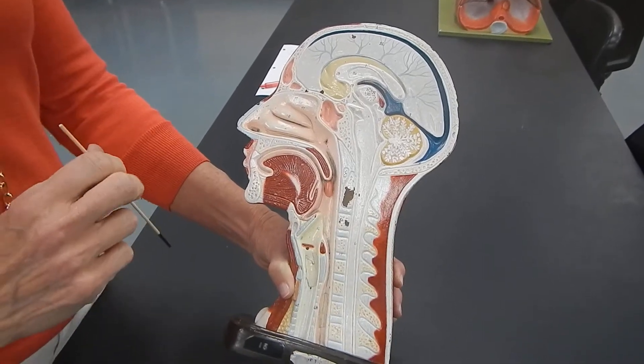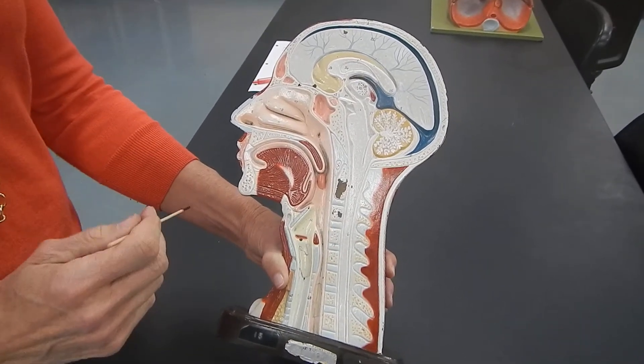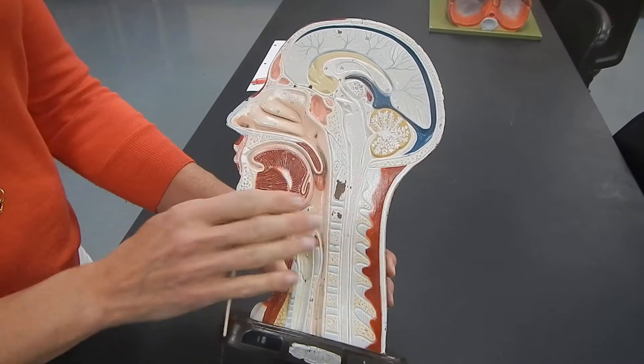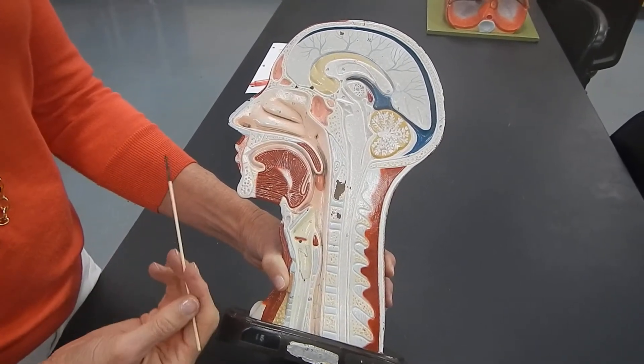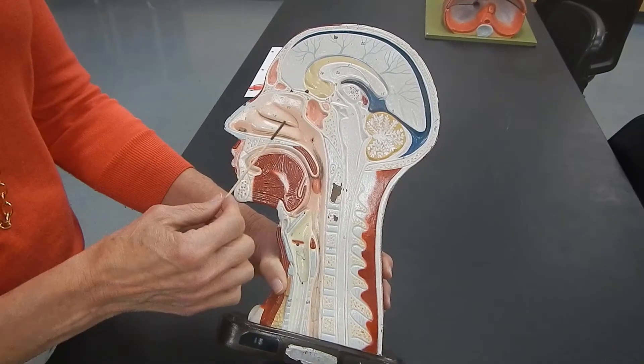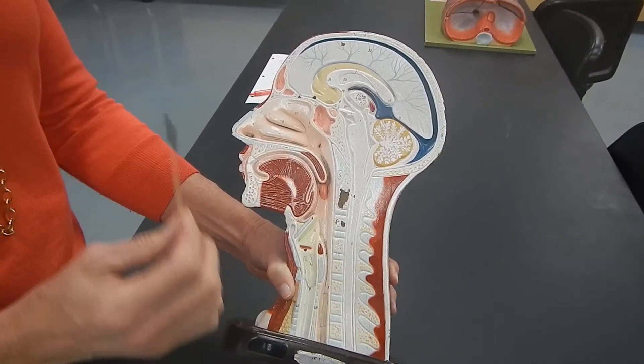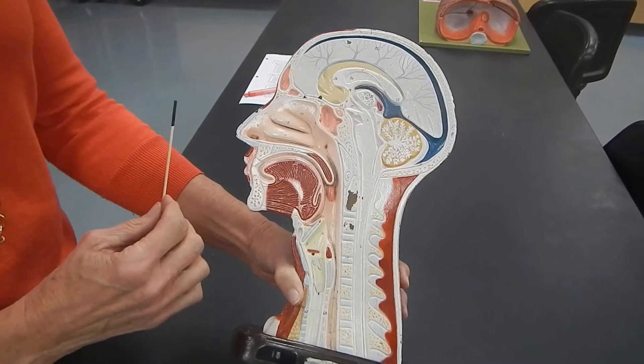The first model we need to understand for respiratory anatomy is this sagittal section of the head. Here we see the upper respiratory system, particularly the nose, the throat, and the voice box. But there are anatomical terms for that.